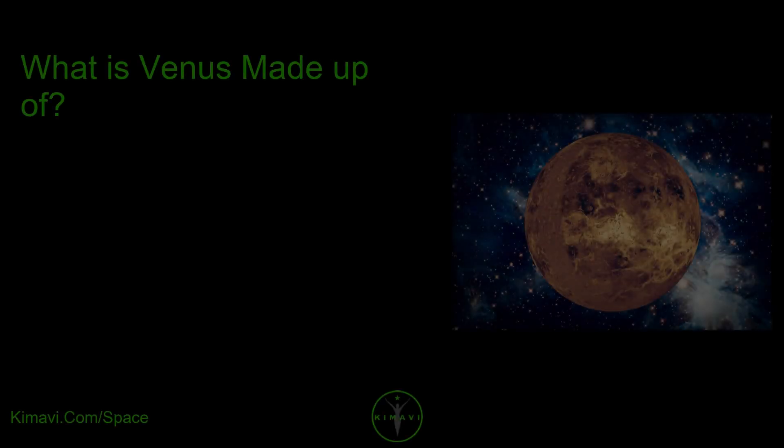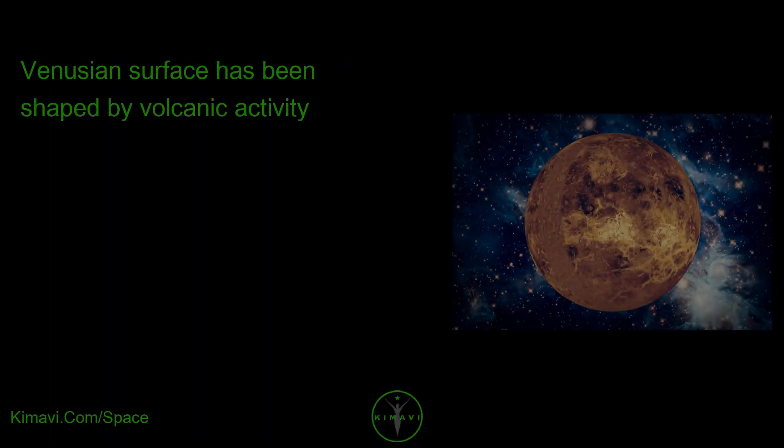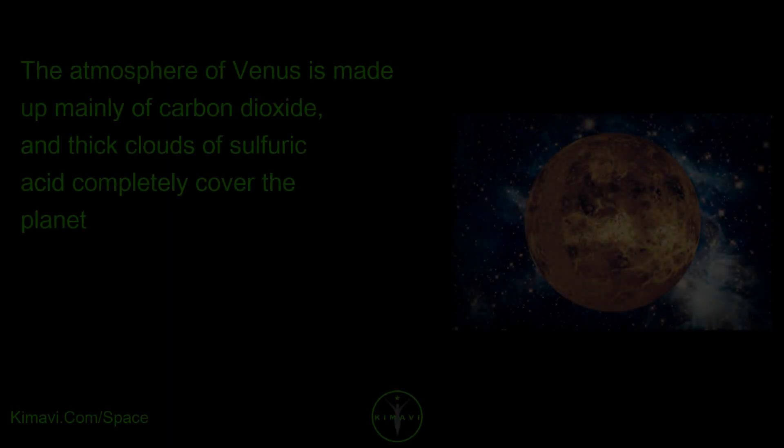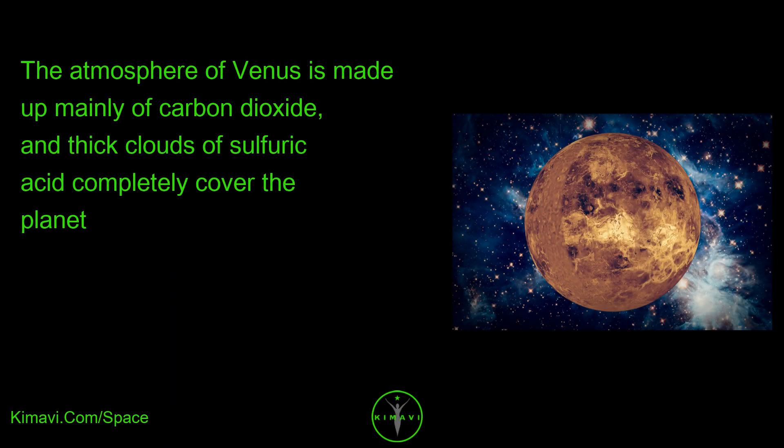What is Venus made up of? Venusian surface has been shaped by volcanic activity. The atmosphere of Venus is made up mainly of carbon dioxide, and thick clouds of sulfuric acid completely cover the planet.